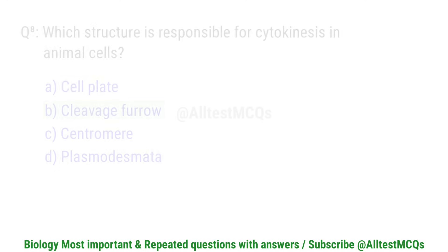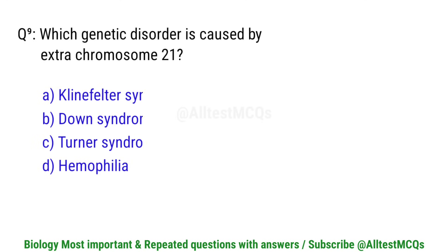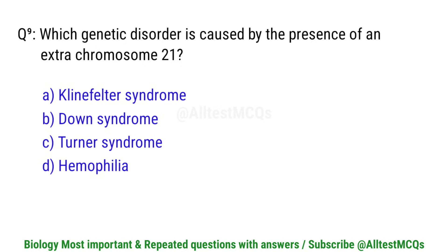Question number 9. Which genetic disorder is caused by the presence of an extra chromosome 21? Right option is B. Down syndrome.